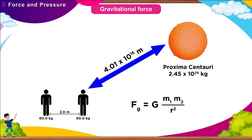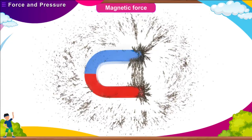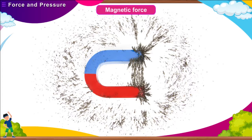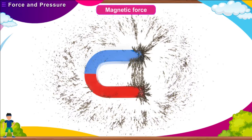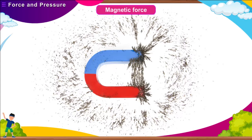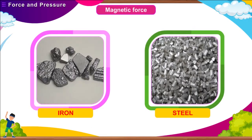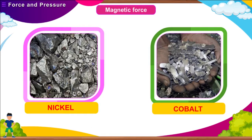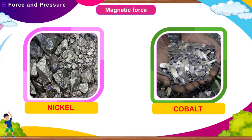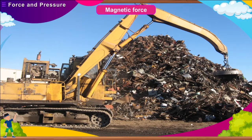Gravitational force is also termed the force of gravity, or simply gravity. Weight is a measure of the gravitational force exerted by the earth. Magnetic force refers to the force exerted by a magnet on a magnetic substance. This force acts on an object from a distance. Examples of magnetic substances are iron, steel, nickel, and cobalt. Magnetic force finds application in areas such as separating scrap iron from a heap of garbage.